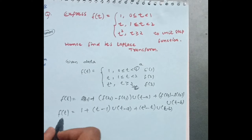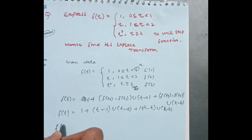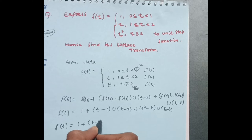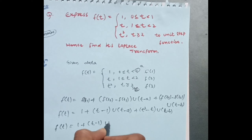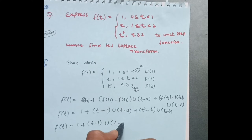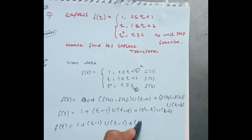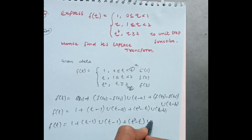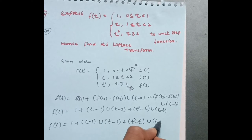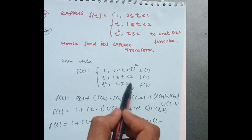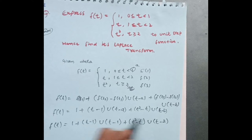Therefore, f(t) = 1 + (t−1)·u(t−1) + (t²−t)·u(t−2). This is our complete expression for f(t) in terms of unit step functions.